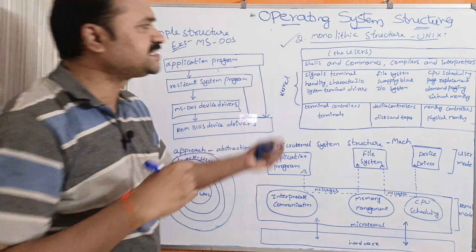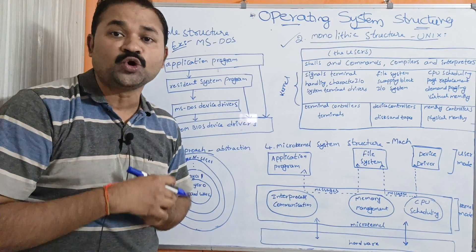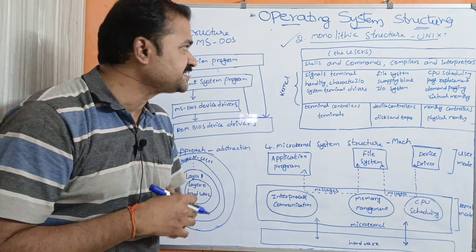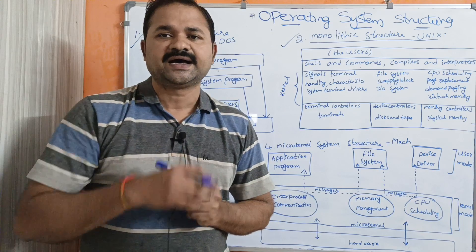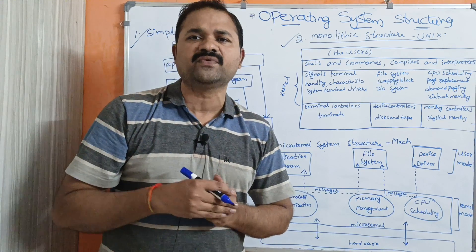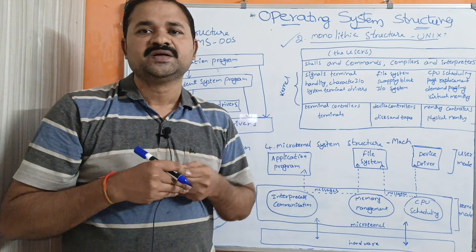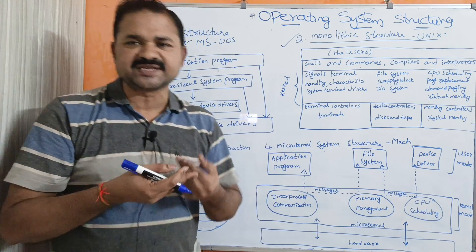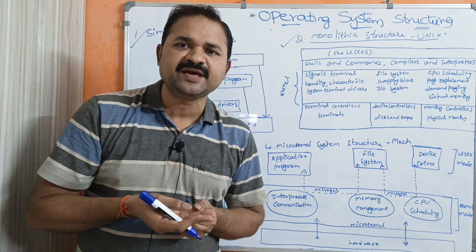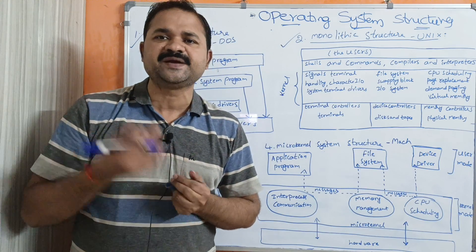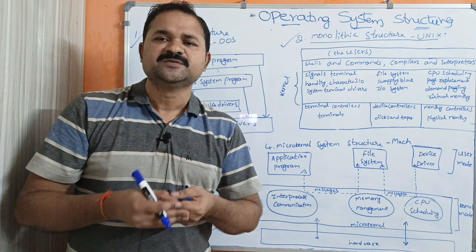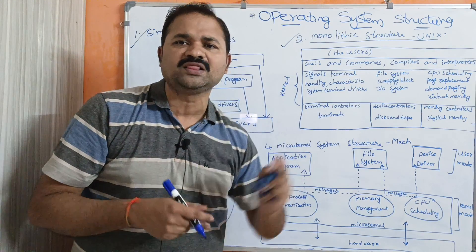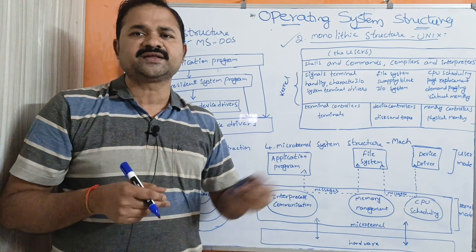The second structure is monolithic structure. The best example is Unix. In this structure we have a kernel which performs all functionalities like process management, memory management, file management, IO management, protection and security. The kernel handles all these functionalities.